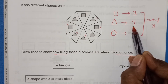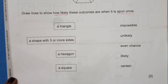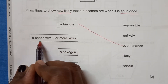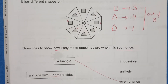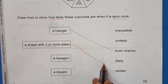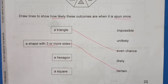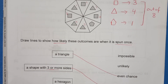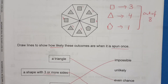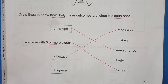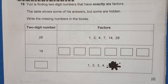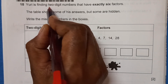A shape with three or more sides — all shapes here have three or more sides, so this is a certain event. Hexagon is not on the spinner at all, so landing on a hexagon is impossible. Square appears 3 times out of 8, which is less than half, so square is unlikely.